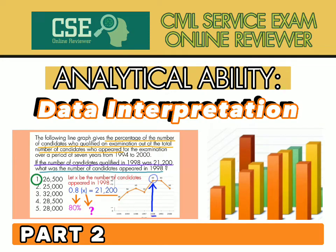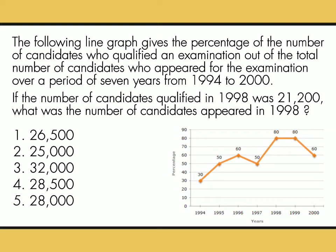Welcome to Part 2 for Data Interpretation. You can check Part 1 provided in the description box below. Let's continue. Line graph na naman tayo. The following line graph gives the percentage of the number of candidates who qualified an examination out of the total number of candidates who appeared for the examination over a period of 7 years from 1994 to 2000.